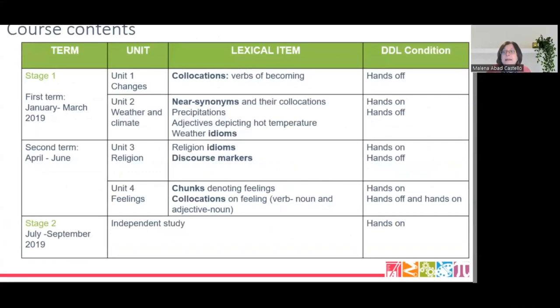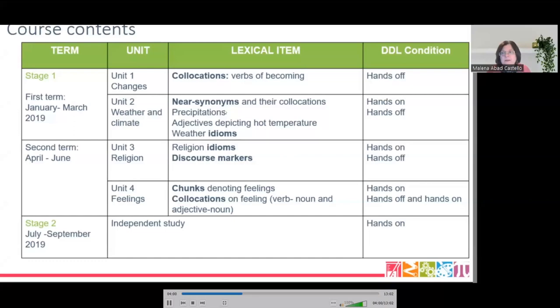There were five types of lexical items: near synonyms, collocations, discourse markers, idioms, and chunks. These were presented and studied in four teaching units developed for the study.